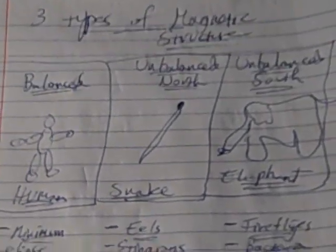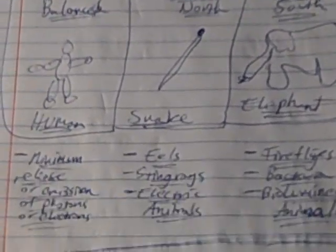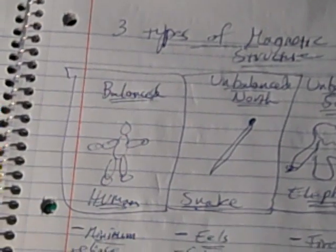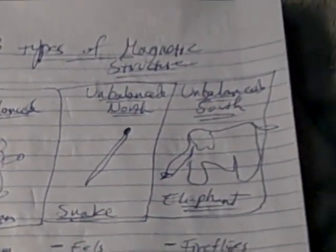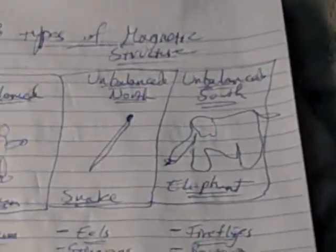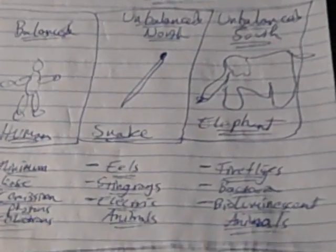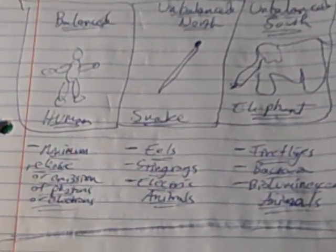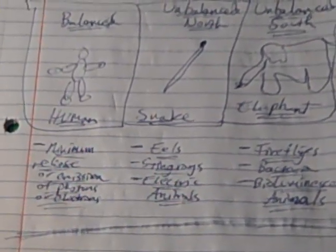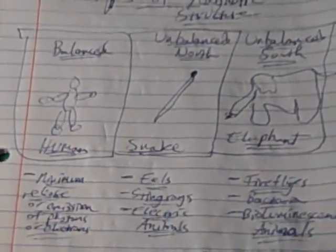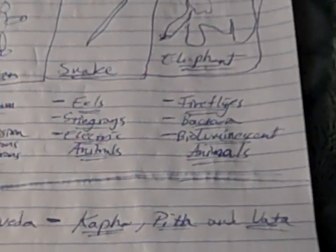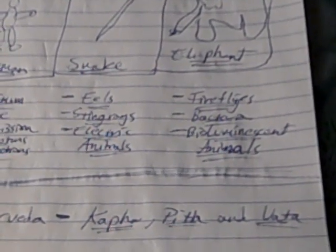However, when you get to the unbalanced systems, and I don't know exactly how it works, and I don't even know if I have the categories right, but I'm certain that there are two unbalanced systems and then one balanced system, two unbalanced magnetic structures and one type of balanced magnetic structure, and there may be various variations within all that. One of these categories is where you have electron emissions. So, eels, stingrays, electric animals, I don't know if it's the unbalanced north or the unbalanced south, and then the other one you have photon emission: fireflies, bacteria, bioluminescent animals.